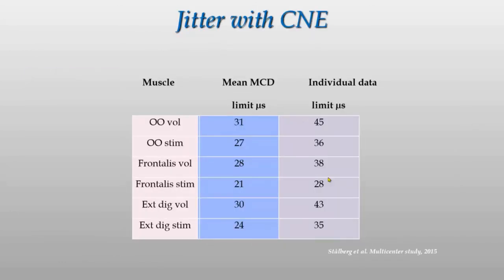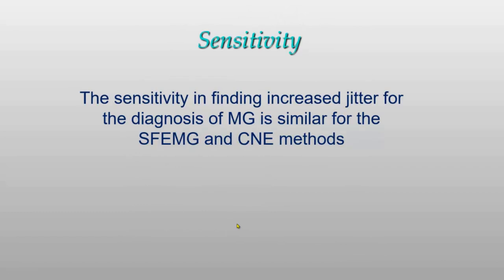In a multicenter study from Europe, America, Japan, and South America, we developed reference values for the orbicularis oculi, frontalis, and extensor digitorum muscles under voluntary stimulation. These include jitter for individual recordings and the mean across 20 recordings. Comparing single fiber and concentric needle jitter, we found them very similar in sensitivity for myasthenia. So we can safely use concentric needle jitter for diagnosis.